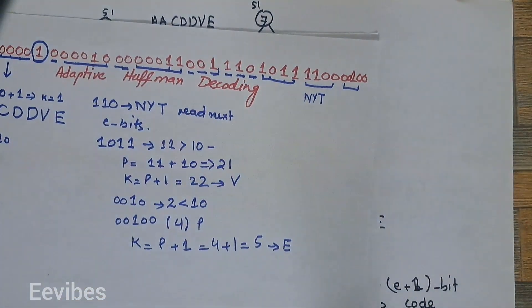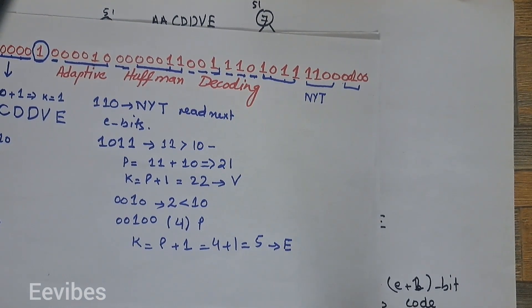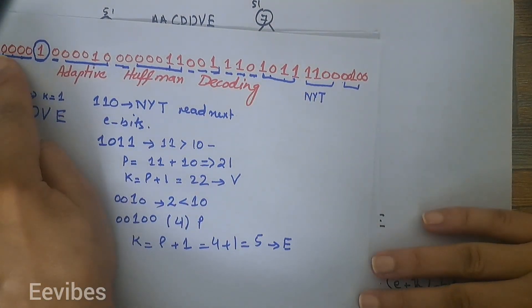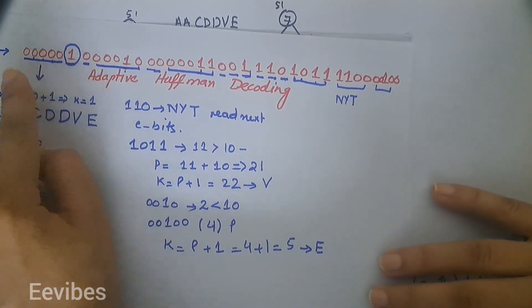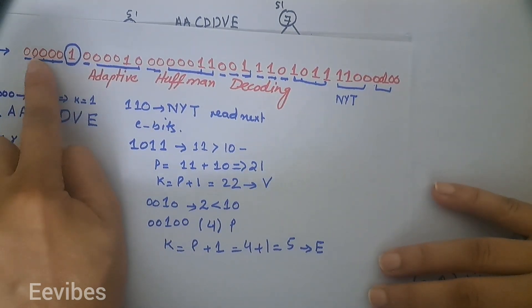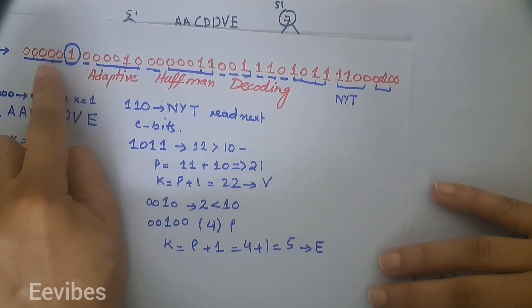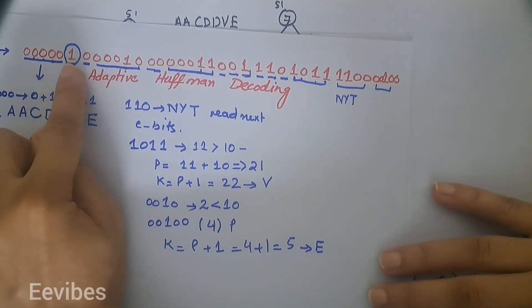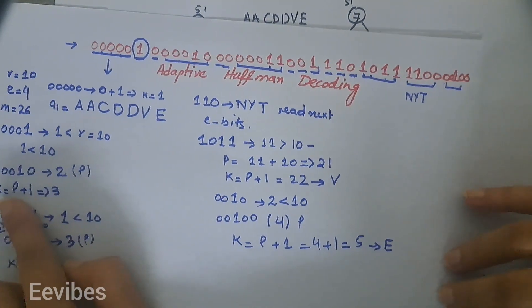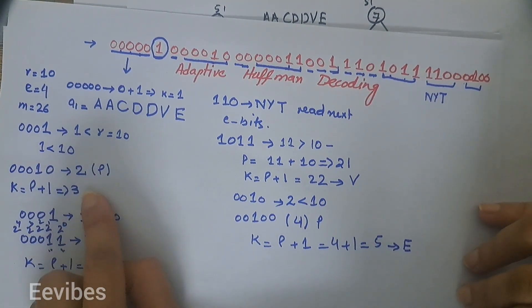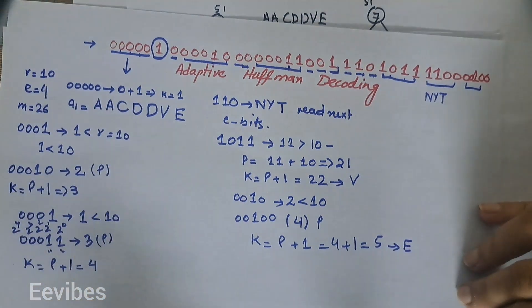To summarize: we keep reading bit combinations until we reach an external leaf. If the leaf corresponds to a symbol, we write it down. If it corresponds to the NYT node, we read e bits, check if the decimal value is greater or less than r. If less than r, we read one more bit to find decimal value p, then the index k = p+1, and write the corresponding symbol. This completes the adaptive Huffman decoding procedure.